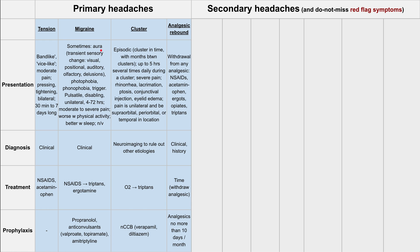The diagnosis for cluster headaches is also clinical, though you do want to do neuroimaging to rule out other etiologies — usually a CT scan or MRI. The treatment is pretty unique: they tend to go away quickly with 100% O2. If oxygen doesn't help, you can try triptans. The prophylaxis for cluster headaches is non-dihydropyridine calcium channel blockers — you can use verapamil or diltiazem.